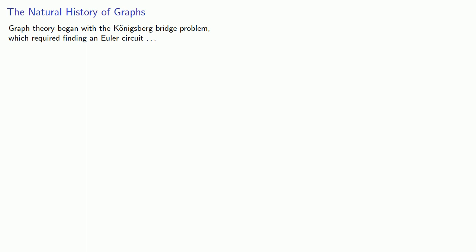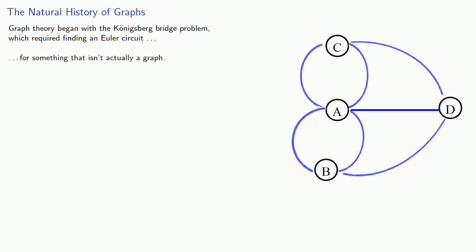Graph theory began with the Königsberg bridge problem, which required finding an Euler's circuit for something that isn't actually a graph. In a true graph, there is at most one edge between any two vertices. But in the Königsberg bridge problem, most of the vertices were multiply connected, so we introduced the idea: if some vertices are joined by two or more edges, you have a multigraph. In practice, there isn't a lot of difference between how we treat graphs and multigraphs, so we often don't worry about that distinction.